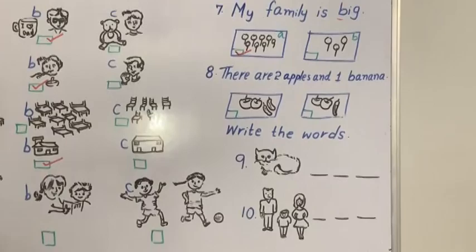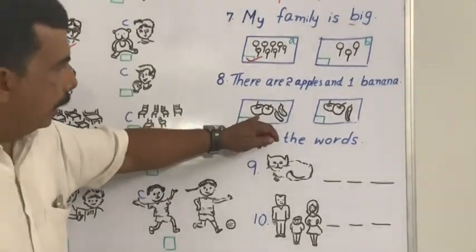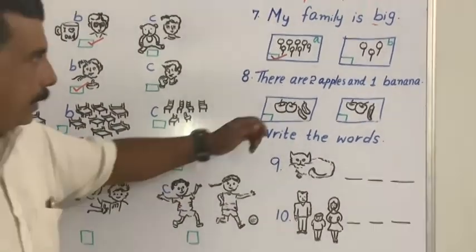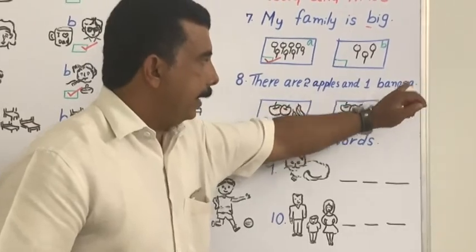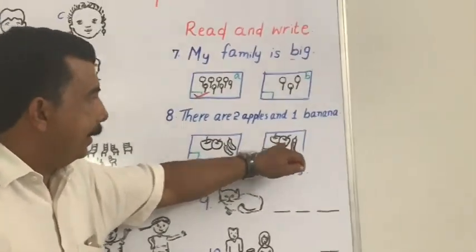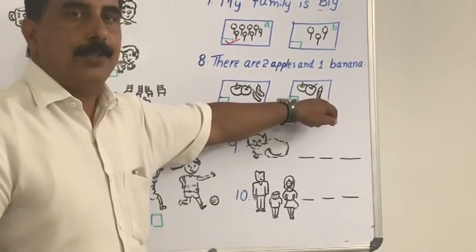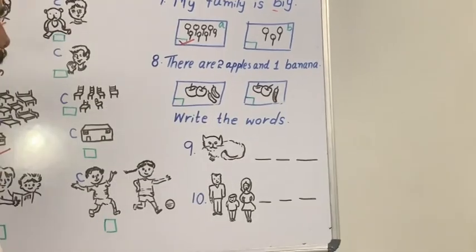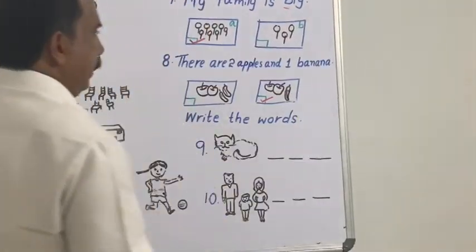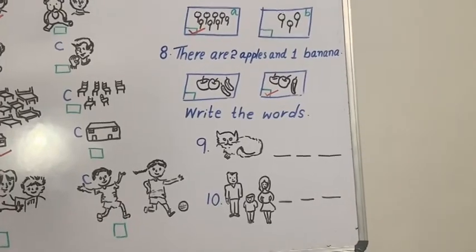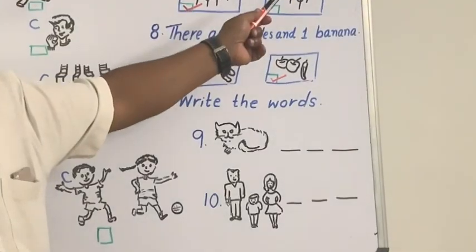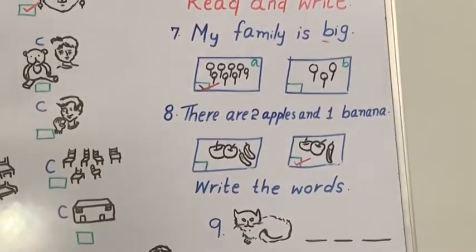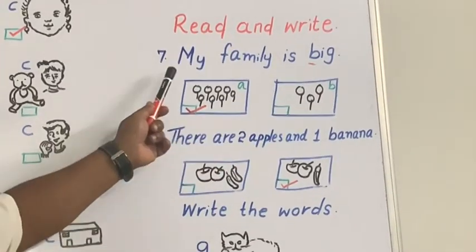Question number 8: 'There are 2 apples and 1 banana.' Which picture carries 2 apples? Count — one, two, one, two — both show 2 apples. What to do then? Read the second part: 'and 1 banana.' Here there are 2 bananas, and here there is 1 banana. So the answer is B. It was very easy — you just read and write. You should be able to read: 'There are 2 apples and 1 banana.'